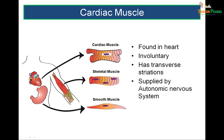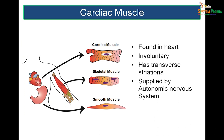Cardiac muscle is present in the heart. It is also striated but branched, having intercalated discs. It is involuntary, totally under the autonomic nervous system.